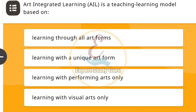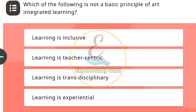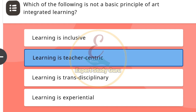AIL is a teaching-learning model based on — the correct answer is learning through all art forms. Next: Which of the following is not a basic principle of art integrated learning? The correct answer is learning is teacher-centric.